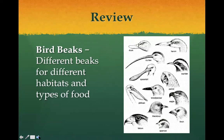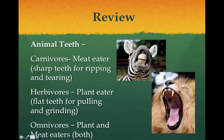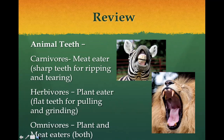Just a quick review. I'm sure you'll remember our bird beaks lab that we did. Birds are definitely a great example of different types of adaptations — different types of beaks for different habitats and different types of food. Animal teeth: carnivores are meat eaters, they have sharp teeth for ripping and tearing meat. Think of that lion and those sharp pointed teeth. Herbivores, plant eaters, have flat teeth for pulling out plants and grinding them up.